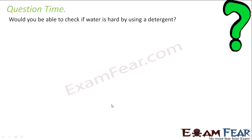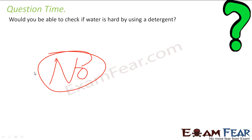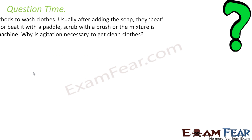Question: Would we be able to check if water is hard by using detergent? No. Because detergent behaves exactly the same with hard and soft water, so there is no way to differentiate.